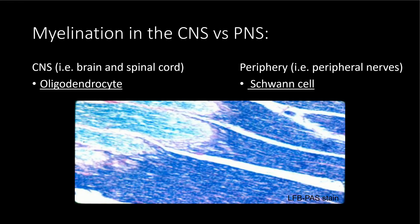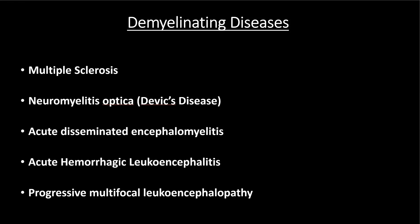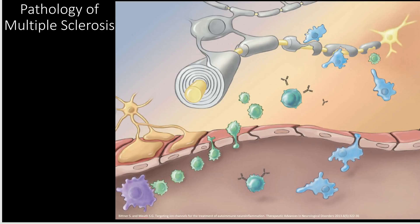The reason I'm focusing so much on myelin is because multiple sclerosis is a demyelinating disease. Demyelinating diseases is an umbrella term that includes a lot of different diseases. Multiple sclerosis is by far the most well-known and most common of these, but just know that there are many other diseases that can cause demyelination.